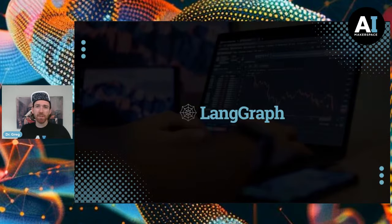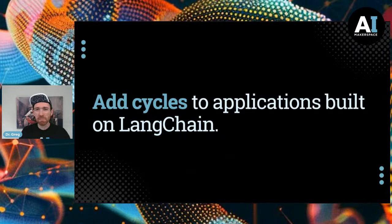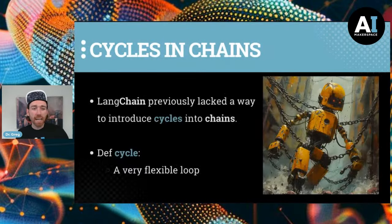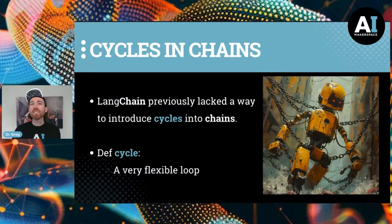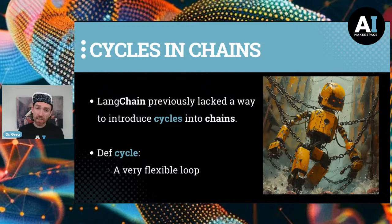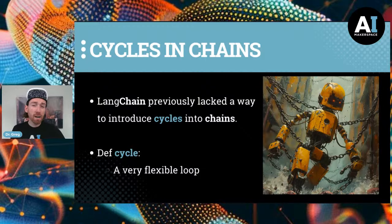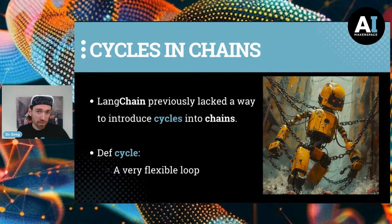LangGraph is all about adding cycles to applications built on LangChain. Previously, before LangGraph, LangChain lacked an easy way to introduce cycles into chains. When we think of a cycle, we want to think of a more complex, more dynamic for-loop, really. If you're familiar with agents in LangChain, the agent executor has actually been updated to be more agent-first, agent-forward, and more cyclic in nature.